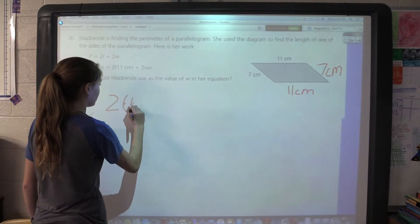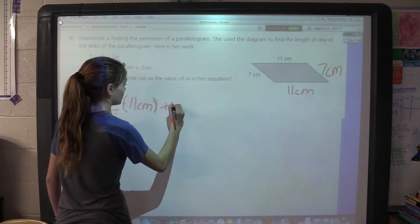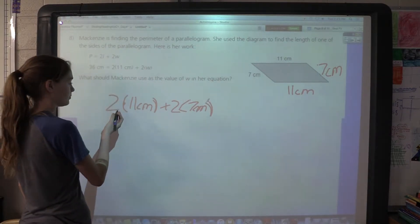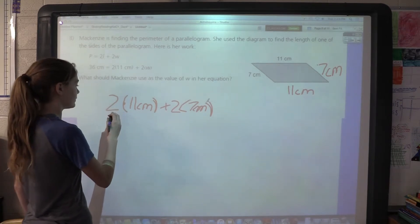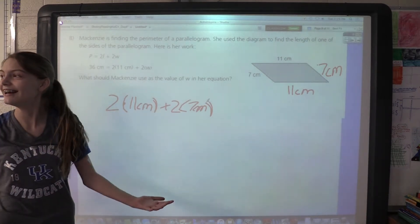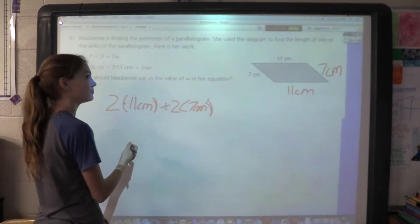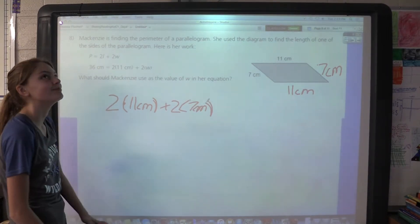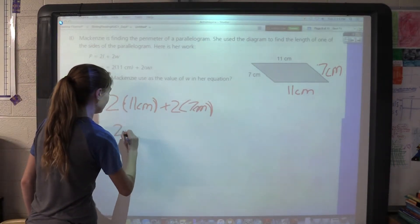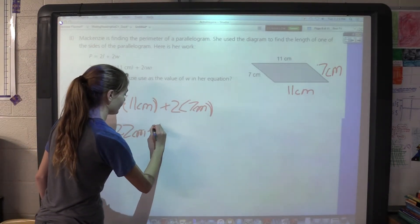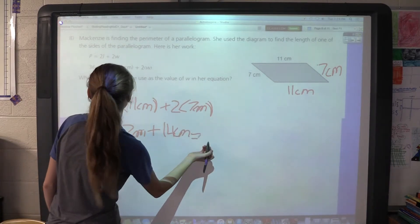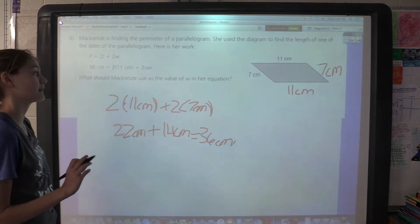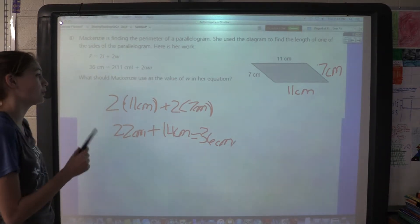She'll be doing 2 times 11 centimeters plus 2 times 7 centimeters, which would be 22 centimeters plus 14 centimeters, which is 36 centimeters. And what w should be would be 7 centimeters. The math practice I used is what I know about finding the perimeter of a parallelogram.